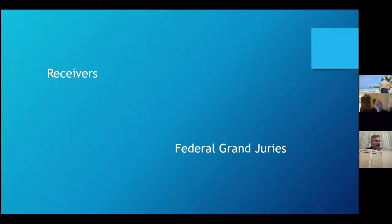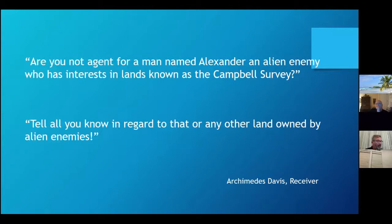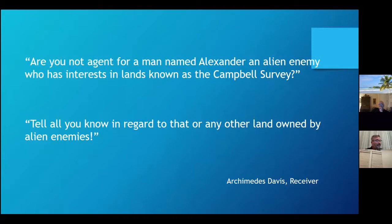The authors of sequestration warned that any such person willfully failing to give information shall be guilty of a high misdemeanor. Armed with these extraordinary powers, receivers and grand juries were a threatening presence on the home front. Receiver Archimedes Davis wrote to William Nash of Abingdon, Virginia: Are you not agent for a man named Alexander, an alien enemy who has interest in lands known as the Campbell Survey? Tell all you know in regard to that or any other lands owned by alien enemies. All residents were required to immediately report alien assets in their possession and inform the government of any such assets possessed by a neighbor.